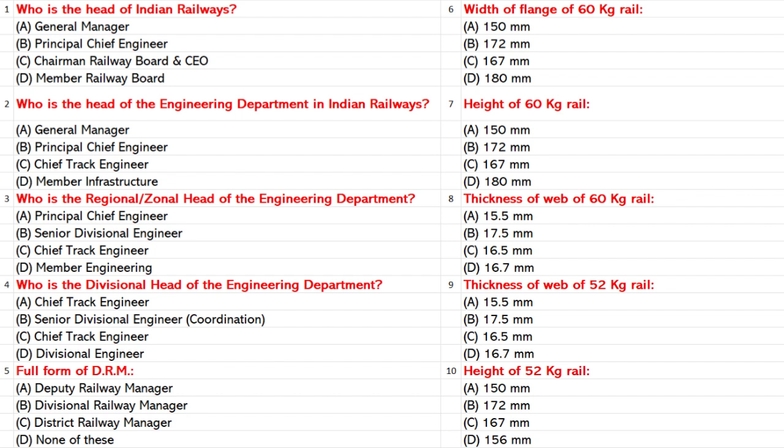Thickness of Web of 60 kg rail: A. 15.5 mm. B. 17.5 mm. C. 16.5 mm. D. 16.7 mm. Answer: C. 16.5 mm.